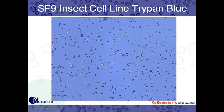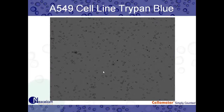Here are some images. This is an SF9 insect cell line stained with Trypan Blue on our Auto T4 software. You can see it has a nice blue color in the background, and you can make out some dead cells as you scan the image. This is our A549, a human alveolar basal epithelial cell on our Vision — it's not blue due to differences in optical hardware. You can visually see our live cells with a distinct round membrane and bright center, and our dead cells stain dark for the Trypan Blue.